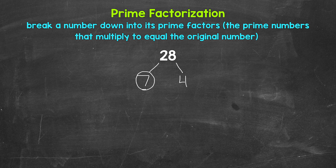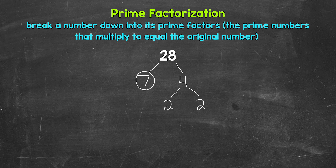4, on the other hand, is a composite number, so we can continue to break that down. We need to think of 2 factors. Well, 2 times 2 equals 4. 2 is a factor of 4. So let's break this down into 2 and 2. Now 2 is a prime number, so we are done here and here. And we're done with the prime factorization of 28. We cannot break anything else down any further.